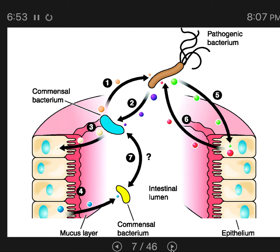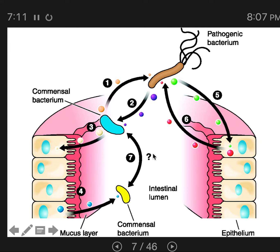The three main components of the intestine are the microbiome, the epithelial cells, and the mucus layer. The epithelial cells are shown here — these tan cells are the cells that line the intestine. Here in pink is shown the mucus layer, and the microbes are going to be in the lumen where the digesting food is.